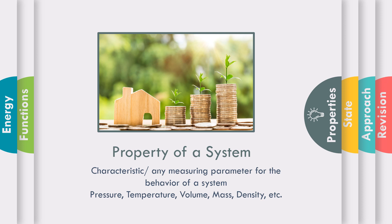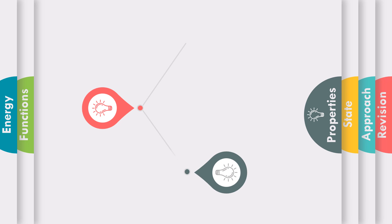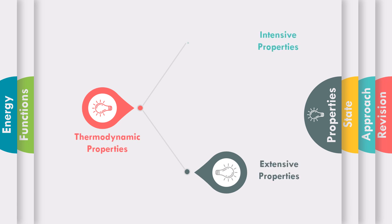Which are the properties of a system? Let us take a few examples. That may be pressure, temperature, volume, mass, density, etc. As far as thermodynamic properties are concerned, these are of two types: intensive properties as well as extensive properties.